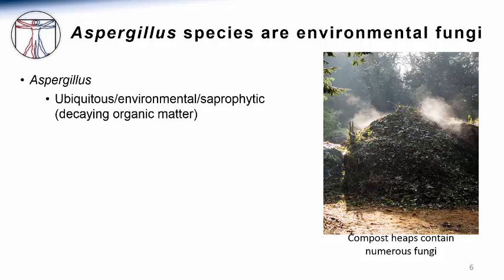Like many fungi, Aspergillus species are primarily environmental organisms, growing throughout the world as saprophytes, or those organisms that break down organic matter. As can be seen in this picture of a steaming pile of compost, the temperatures here can reach 45 degrees, and fungi that are able to survive here would clearly be able to survive one of the major deterrents to microbial growth in humans, which is the 37-degree body temperature.